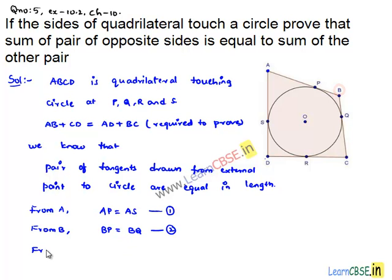And from point C, CQ and CR are two tangents. Those lengths will be also equal. And finally, from point D, DS and DR are tangents. Therefore, we can say that DR is equal to DS. Let this be as equation number four.